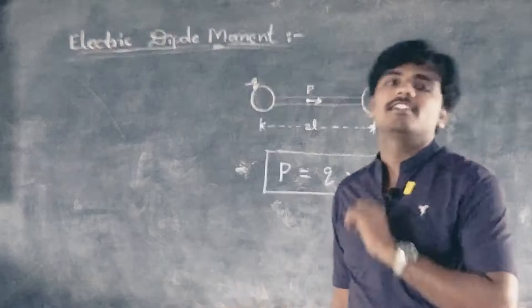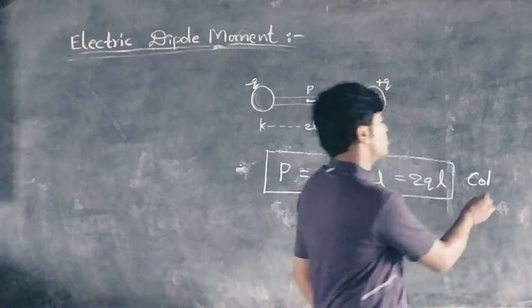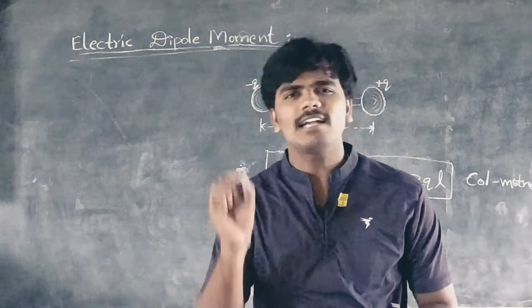The electric dipole moment is a vector quantity. Its direction is along the axis of the dipole, pointing from the negative charge to the positive charge. The unit of dipole moment is coulomb meter.